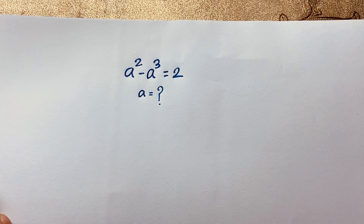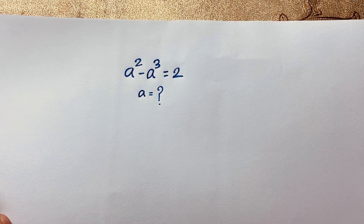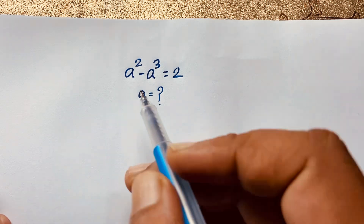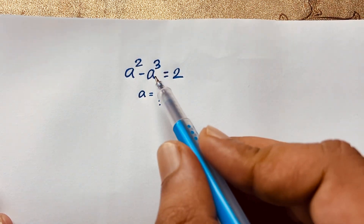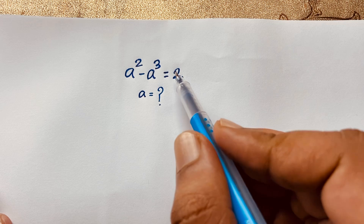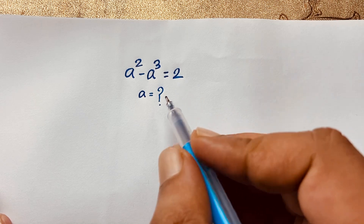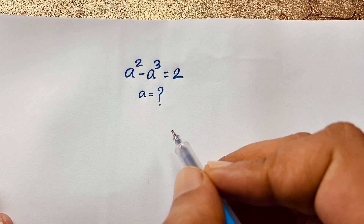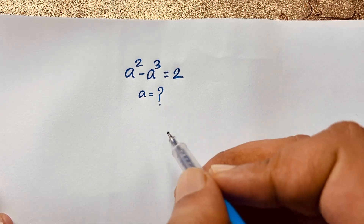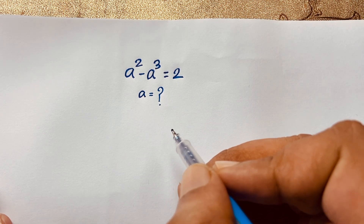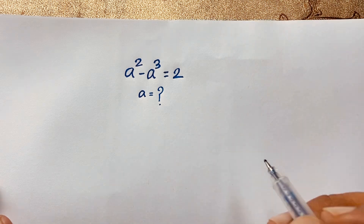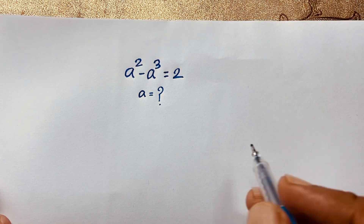Hello everyone, welcome to Russell's Classroom. Today we are solving a nice exponential math problem, which is a squared minus a to the power 3 is equal to 2. How to solve this Russian math olympiad question? Let's start the solution.